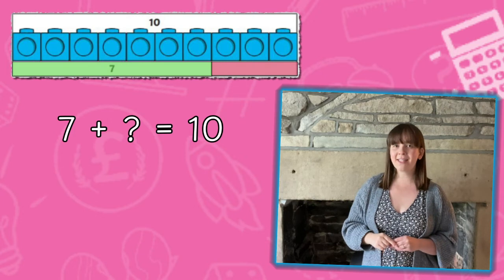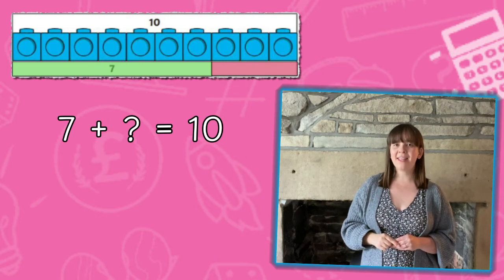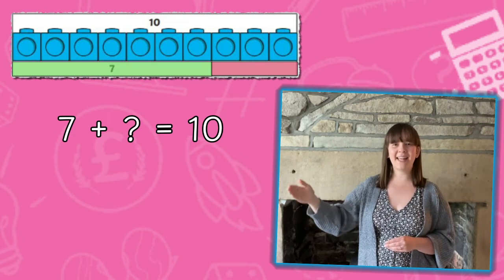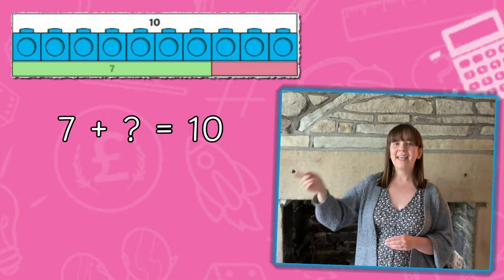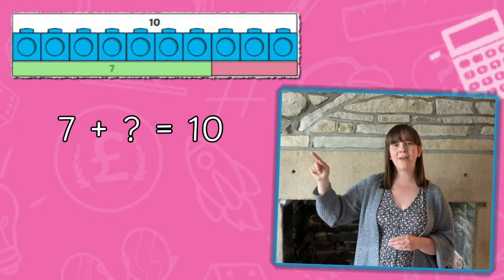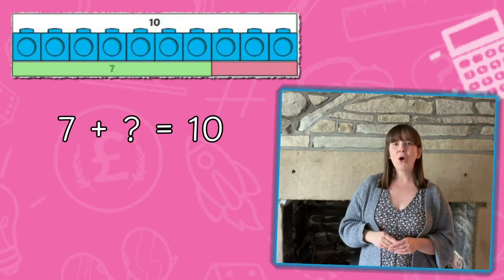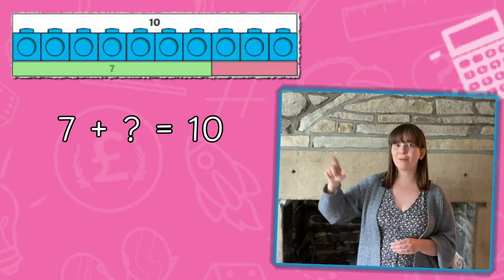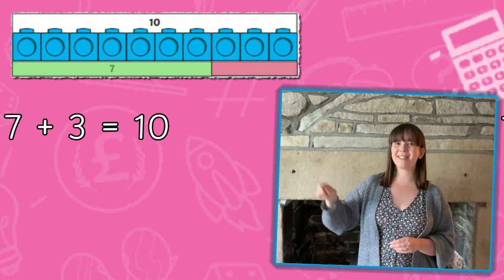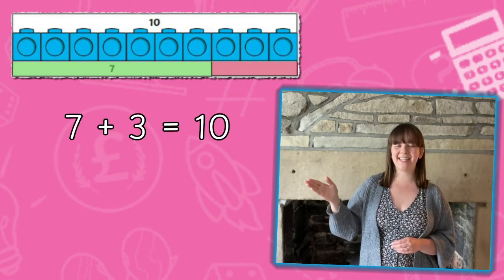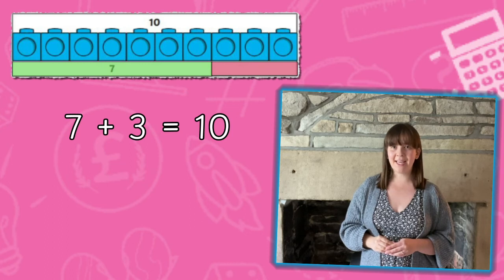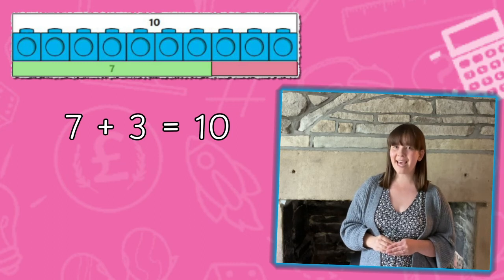Children can add on the interlocking cubes from 7 until they get to 10, either by counting on the sheet or using the cubes themselves. Children need to add 3 more cubes to get to 10. This must mean that 7 add 3 equals 10.